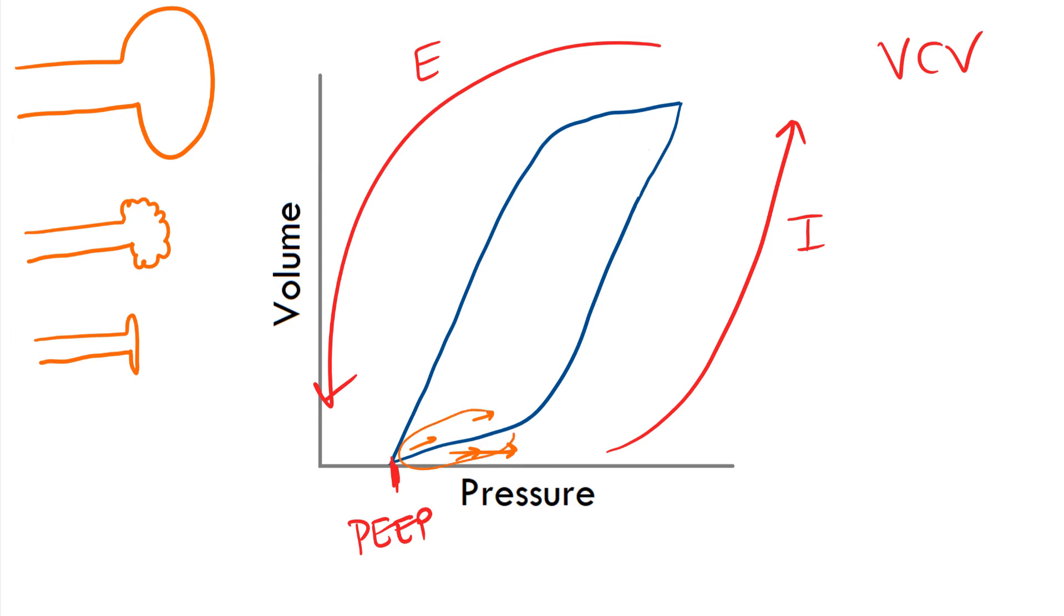Right here, I would say a lot of the deflated alveoli are now becoming recruited. So, now, here's an interesting point. This is known as your critical opening pressure, also known as your lower inflection point.